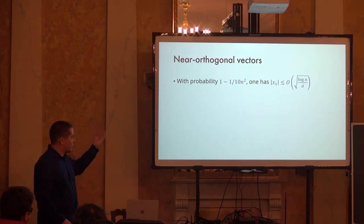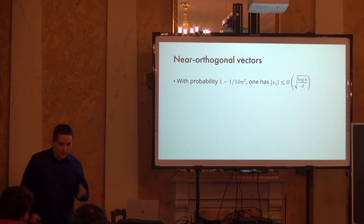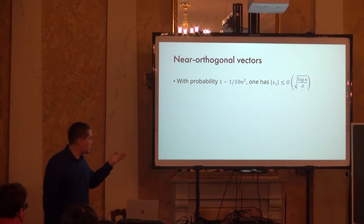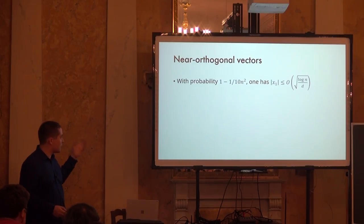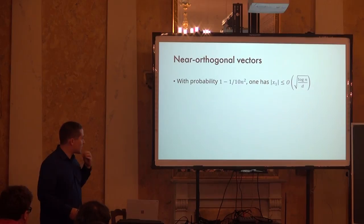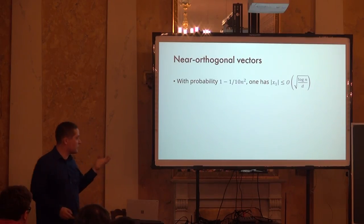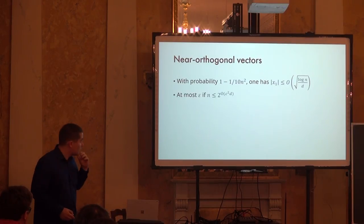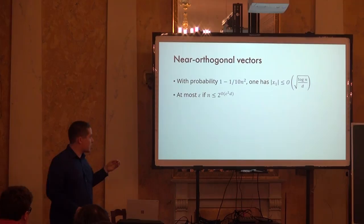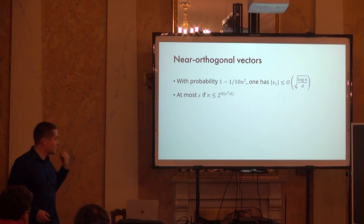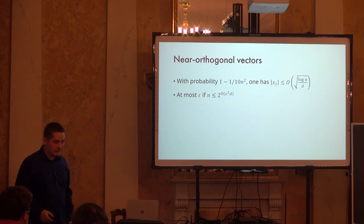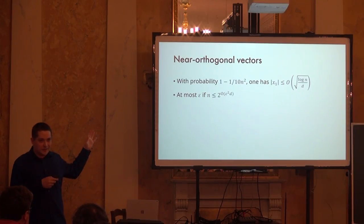Returning to our problem: the typical first coordinate is around 1/√D. Since we need to apply union bound over n² events, we need probability around 1 minus 1/(10n²), which blows up the width slightly — instead of 1/√D we get √(log n / D). In order for this to be at most epsilon, it's enough to have at most 2^(ε²·D) points. That's how we prove you can place 2^(ε²·D) points at nearly equal distances.